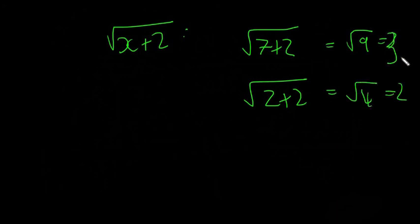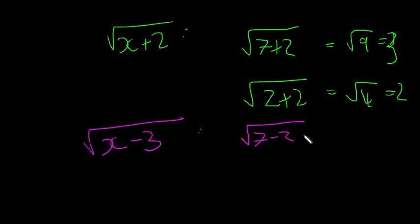But the reason we have to check it is, say for example, I'll do it in purple, that in the square root it was x minus 3. So in this case we would have had 7 minus 3, which would have been the square root of 4, which would have been 2. So all is okay.